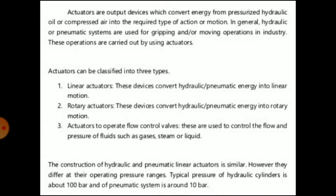Second are rotary actuators — these devices convert hydraulic or pneumatic energy into rotary motion. Third are actuators to operate flow control valves, which are used to control the flow and pressure of fluids such as gases, steam, or liquid. The construction of hydraulic and pneumatic linear actuators is similar; however, they differ in operating pressure ranges. A typical hydraulic cylinder operates at about 100 bar, while a pneumatic system operates at around 10 bar.